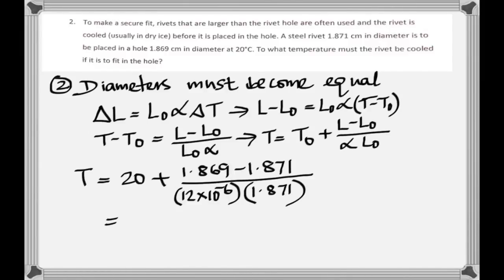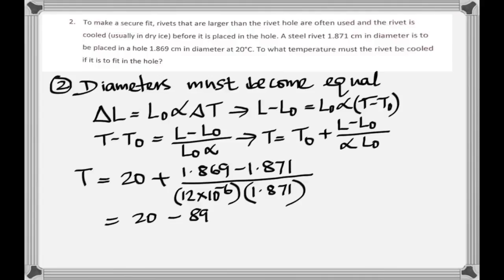The alpha of steel is 12 times 10 to the negative 6 — metals don't expand very much. Using the formula with the original length of 1.871 m, the calculation gives a change in temperature of negative 69 degrees Celsius. It's negative because the rod needs to contract from 1.871 to 1.869 — you want it to become smaller, hence the negative temperature change.